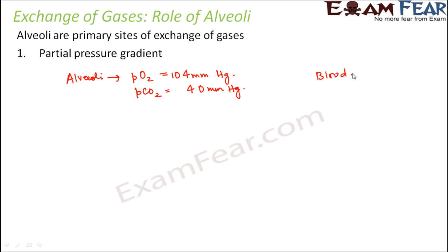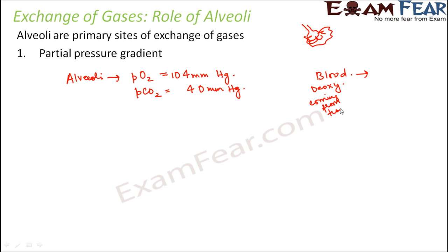Now, what is the partial pressure of oxygen and carbon dioxide in the blood near the alveoli? The blood vessels near the alveoli are carrying deoxygenated blood from different parts of the body — blood that has received carbon dioxide from different tissues. In this deoxygenated blood, the partial pressure of oxygen is 40 and the partial pressure of carbon dioxide is 45.